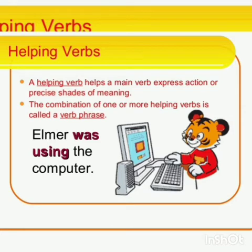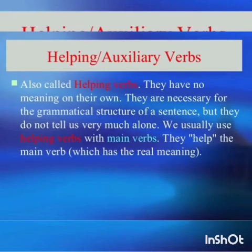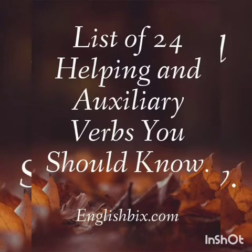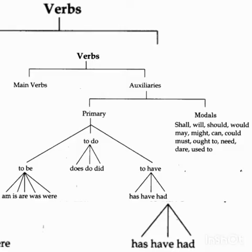A helping verb helps the main verb to express action or give complete meaning in the sentence. For example, 'Elma was using the computer' — 'was' is the helping verb. Helping verbs are otherwise called auxiliary verbs — they are one and the same. Verbs are classified into main verbs and auxiliaries. Auxiliaries are divided into primary auxiliaries and modals.